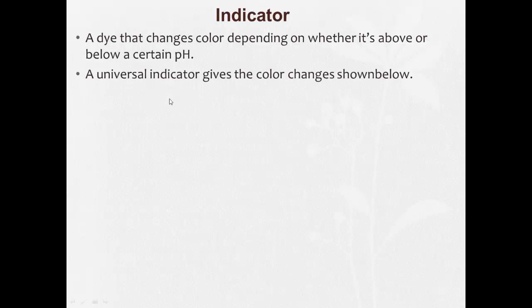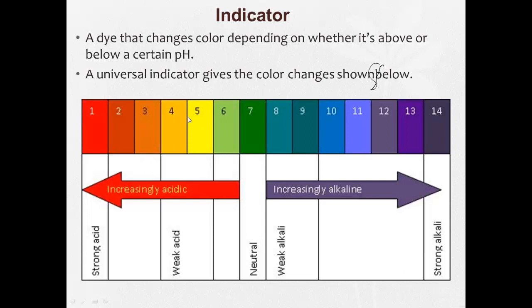Now there's universal indicators that will give the color changes shown below. A universal indicator is something like pH paper that will be green if it's neutral and will change colors that you match up against a known color to determine the pH level of the substance that you're testing.